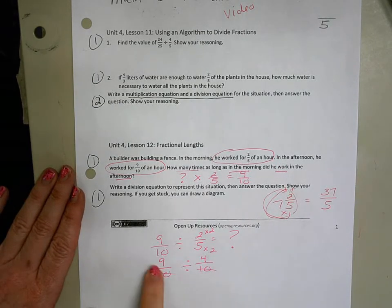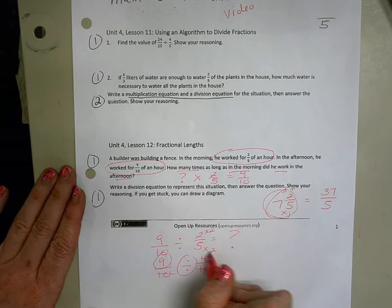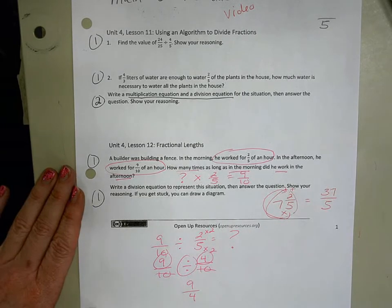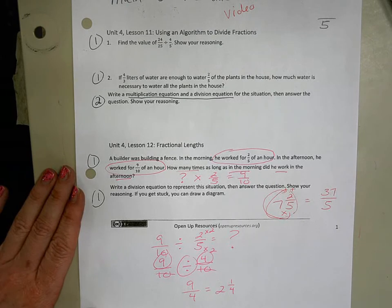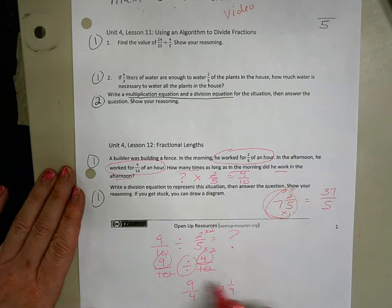And so our answer is nine divided by four, which of course is the fraction nine-fourths. So he worked nine-fourths as long, or if you want to make that into a mixed number he worked two and a fourth times as long in the morning compared to the afternoon.